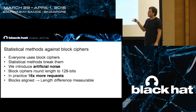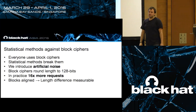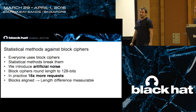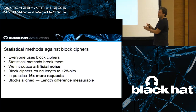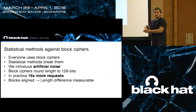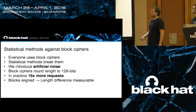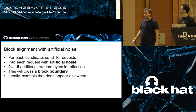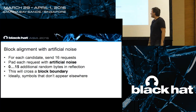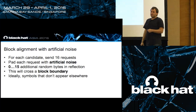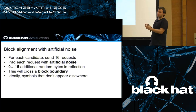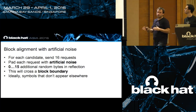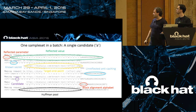For block ciphers specifically, we perform 16 requests per candidate symbol instead of just one. In each request, we add some padding to the reflection value. This results in blocks sometimes being aligned. We introduce artificial noise - random characters added to the reflection - which causes the ciphertext to either cross or not cross a block boundary.